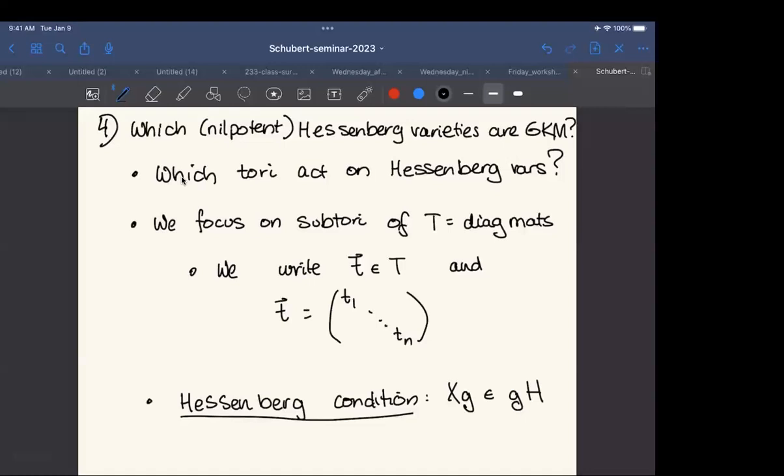Because I am about to outline that the question for semi-simple Hessenberg varieties is both sort of answered and also actually not as complicated in a certain sense. So if we start with this question, which tori act, and then kick the can down the road on the question of is that action GKM, we focused on subtori of the diagonal matrices. For the purposes of the rest of the talk, I'm going to put T with a bracket to just be my matrix and keep the sort of convention of having the t_i's represent the variables.